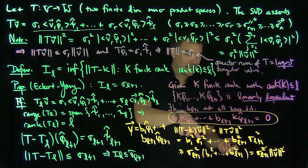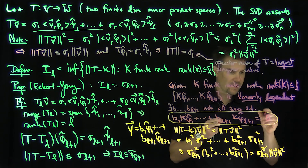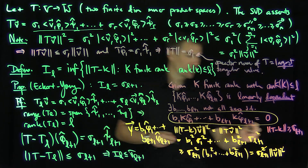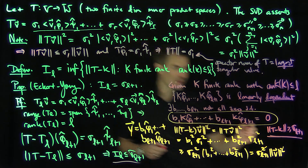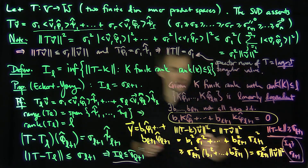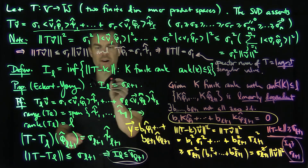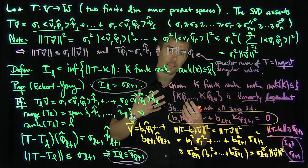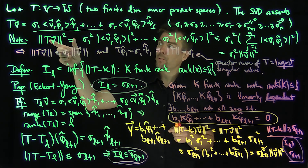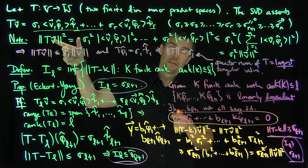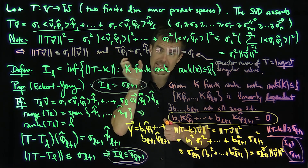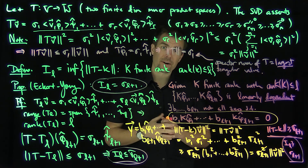This shows that the operator norm of T minus K is at least sigma_{L+1} for any K of rank ≤ L, so I_L ≥ sigma_{L+1}. Combined with I_L ≤ sigma_{L+1}, we conclude that I_L = sigma_{L+1}, proving the Eckhart-Young theorem. The interpretation is that the best finite rank approximation to T, among operators of rank ≤ L, is obtained by truncating the singular value decomposition at level L — keeping only the terms up to psi_L in the decomposition. Thank you very much.